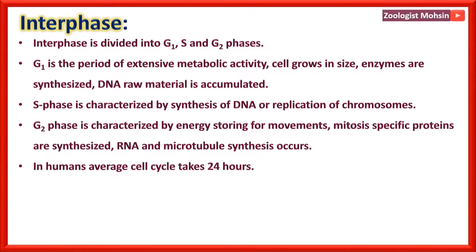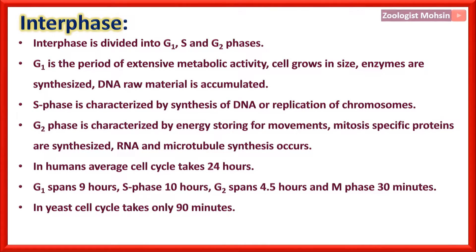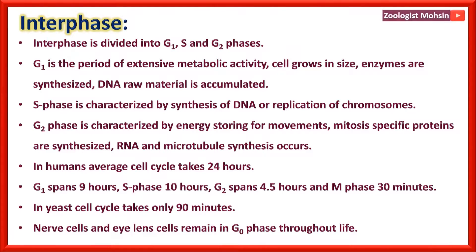In humans, the average cell cycle takes 24 hours: G1 spans about 9 hours, S phase takes about 10 hours, G2 spans 4.5 hours, and the remaining 30 minutes are for M phase — so M phase requires the least time. In yeast, the cell cycle takes only 90 minutes. Nerve cells and eye lens cells remain in G0 phase throughout life and do not divide when fully developed.